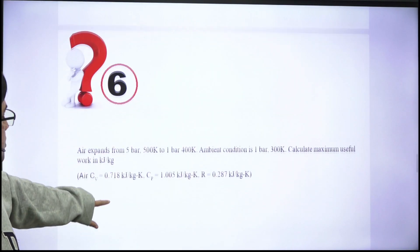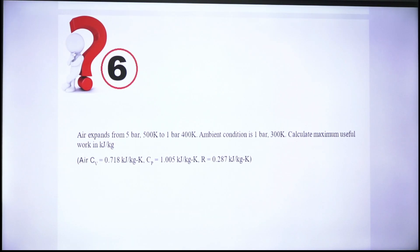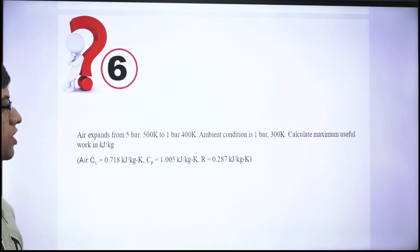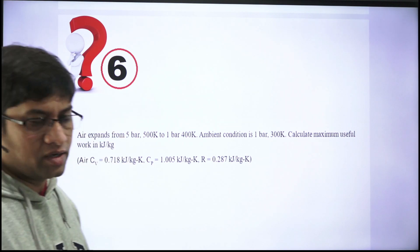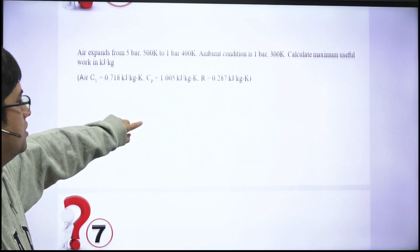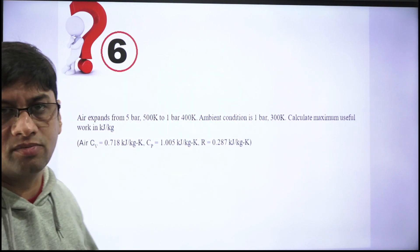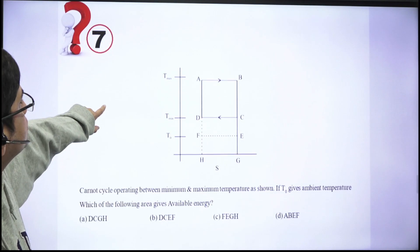Question 6: Air expands from state 1 (5 bar, 500 K) to state 2 (1 bar, 400 K), with ambient conditions of 1 bar and 300 K. You have to calculate the maximum useful work. Cp, Cv, and R are given. This question is related to the availability function of the closed system.